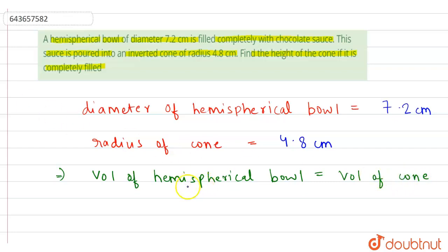So volume of hemispherical bowl formula is 2/3 π r³ where r is the radius of the hemispherical bowl, and volume of cone is 1/3 π r²h where r is the radius of cone and h is the height of the cone.